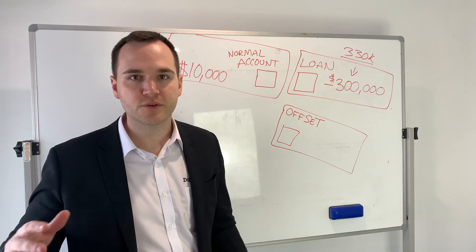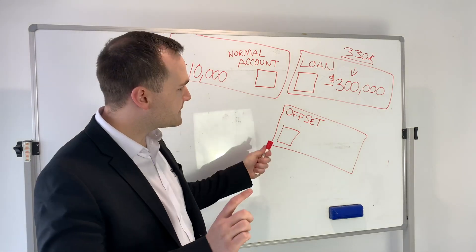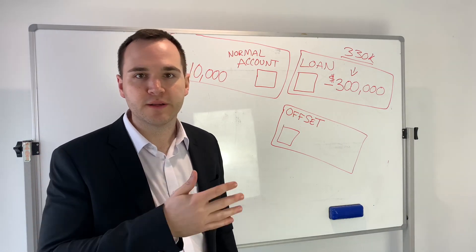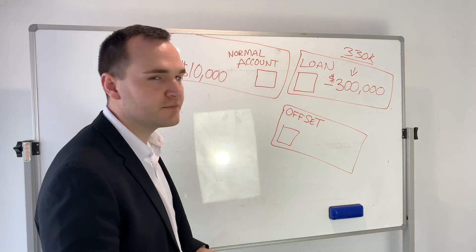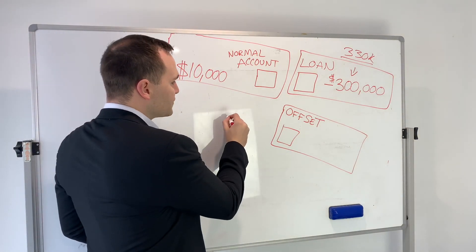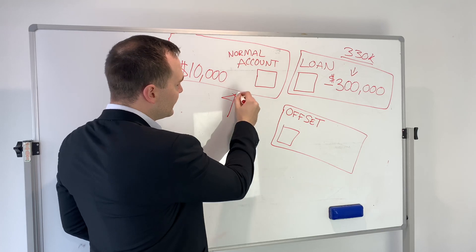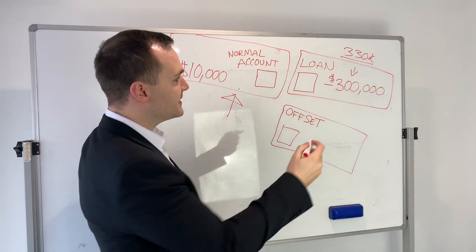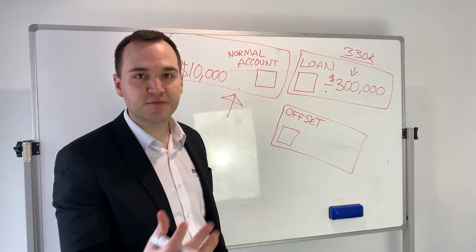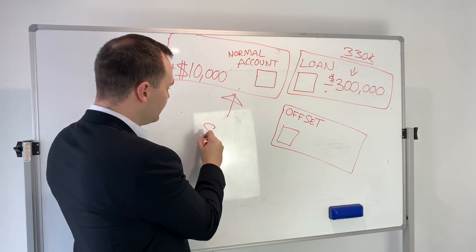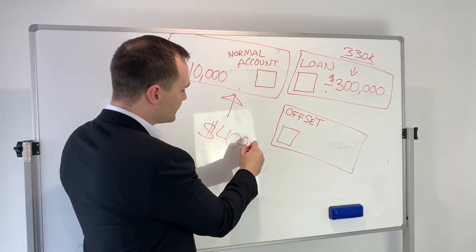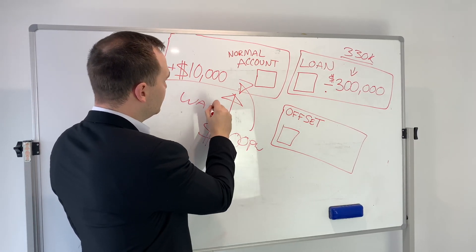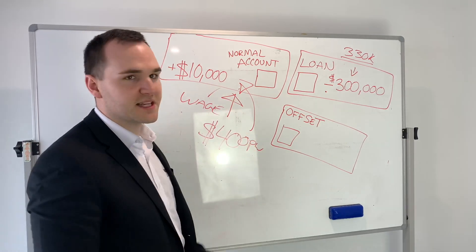I've got multiple lenders — some with Westpac, St. George, NAB, Macquarie, Latrobe, and different lenders. But let's say a person's wage comes in and goes into this account. Then what I did in the beginning — and still do now — is my rent, let's say this property rents for $400 a week, so every single week $400 minus expenses is going into the normal account with your wage.